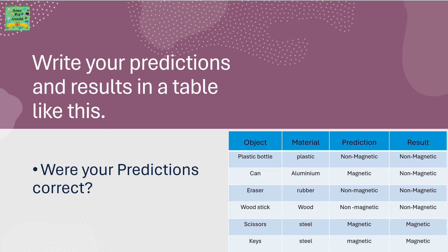Predictions: the plastic bottle is non-magnetic, the can is magnetic, the eraser is non-magnetic, the wood stick is non-magnetic, scissors are magnetic, and keys are magnetic. The results are the same as the predictions.